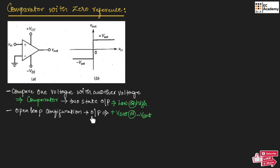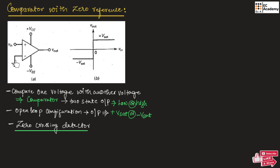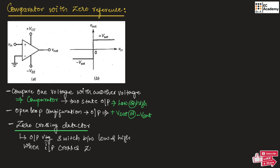Since it is an open-loop configuration, the output can be plus V-saturation or minus V-saturation. This comparator is also known as a zero-crossing detector, because the input voltage is compared with a reference voltage equal to zero volts. That is why it is known as a comparator with zero reference, or zero-crossing detector. The output voltage will switch between low and high whenever the input crosses zero volts.